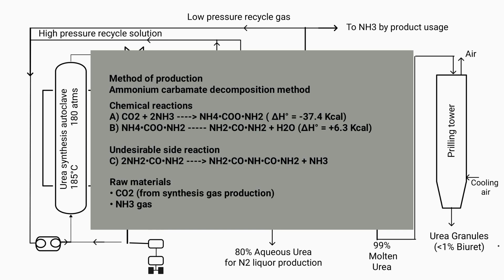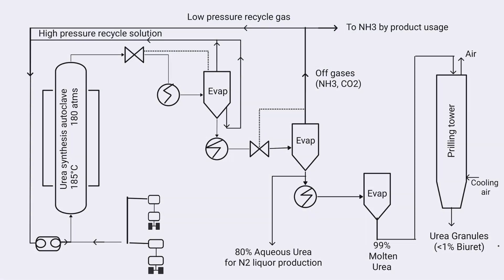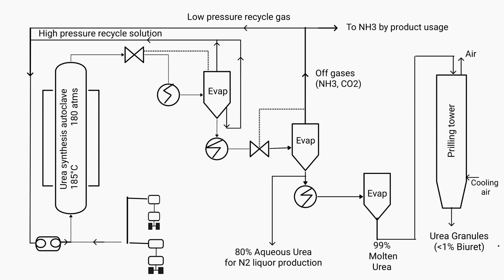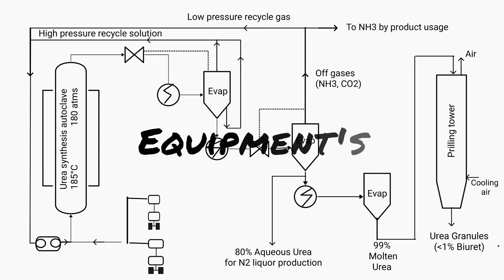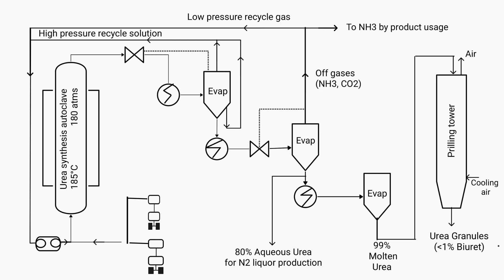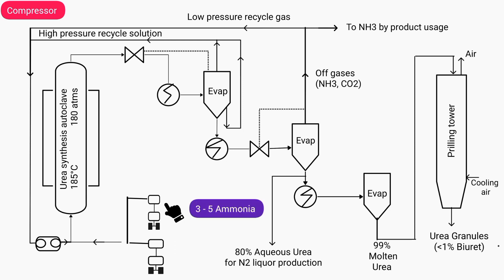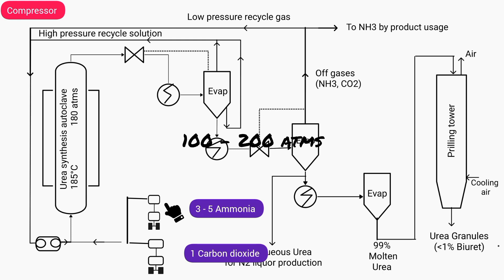To make urea, mainly carbon dioxide and ammonia are required. Now we will learn about all the equipment used in urea production, and then step by step we'll also understand its working process. These are called compressors, which are used to compress the gas. In this process, 3 to 5 moles of ammonia and 1 mole of carbon dioxide are compressed by the compressors, and the pressure during this process remains between 100 and 200 atmospheres.